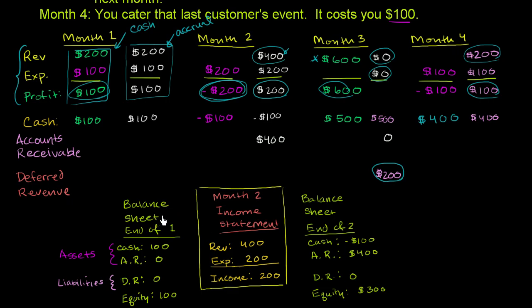I also have drawn the balance sheet at the end of month one and the balance sheet at the end of month two. Or you could also view this balance sheet here as the balance sheet at the beginning of month two. And the main thing to realize is income statement tells you what happens over a time period while balance sheets are snapshots, or they're pictures at a given moment.